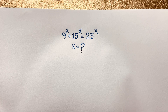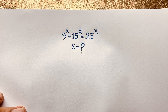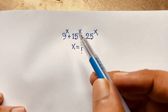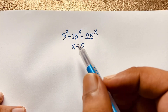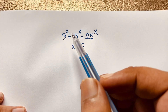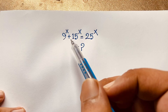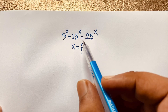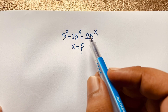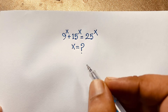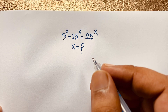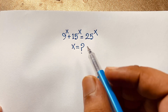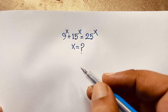Hello everyone, welcome to Russell's Classroom. Today we have solved an interesting exponential Math Olympiad question. It is a nice Math Olympiad question, which is 9^x + 15^x = 25^x. Find x. How do we solve this interesting math problem?